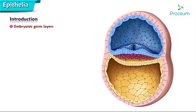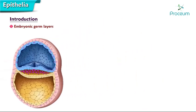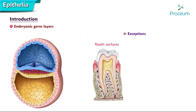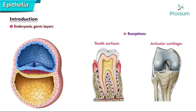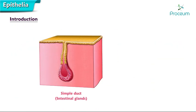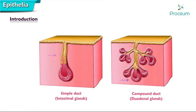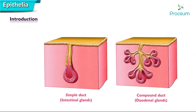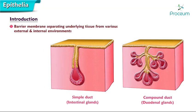Epithelia are specialized layers of tissue arising from all three embryonic germ layers — namely the ectoderm, mesoderm, and endoderm — that line the internal and cover the external surfaces of the body, except in certain areas such as tooth surfaces and articular cartilages. Epithelia also line the ducts and secretory elements of glands, which develop as outgrowths from epithelium-lined surfaces, hence serving as a barrier membrane separating the underlying tissue from various external and internal environments.